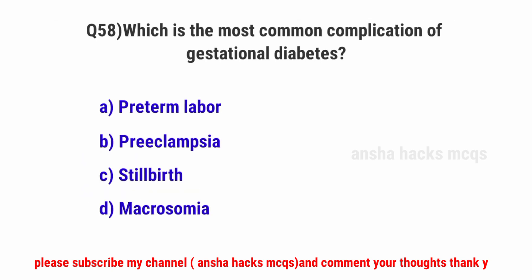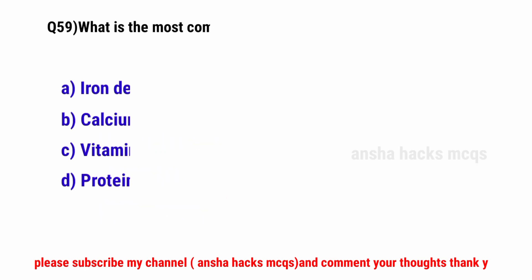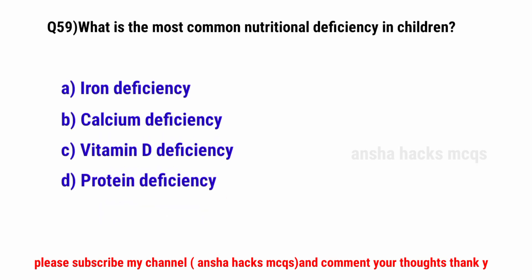Question No. 58. What is the most common complication of gestational diabetes? The correct option is D: Macrosomia.